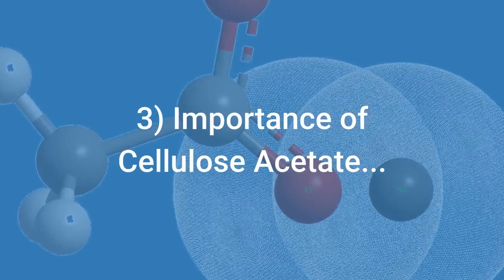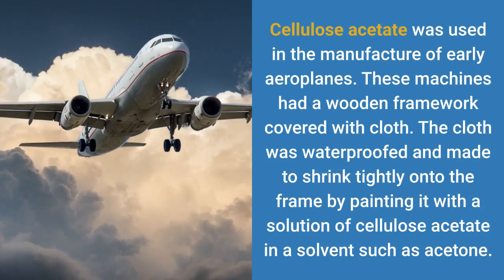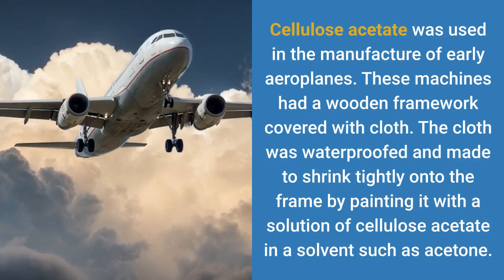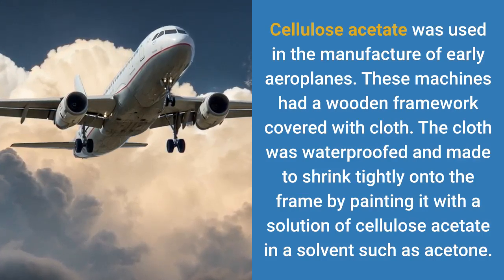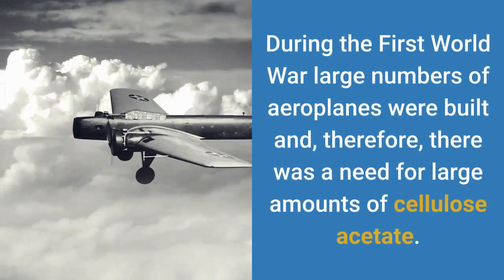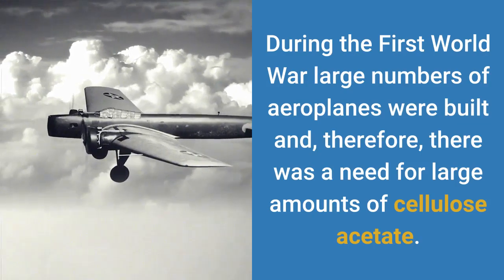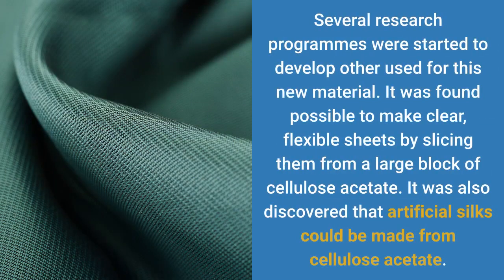Importance of cellulose acetate. Cellulose acetate was used in the manufacture of early aeroplanes. These machines had a wooden framework covered with cloth. The cloth was waterproofed and made to shrink tightly onto the frame by painting it with a solution of cellulose acetate in a solvent such as acetone. During the First World War large numbers of aeroplanes were built and, therefore, there was a need for large amounts of cellulose acetate. Several research programs were started to develop other uses for this new material. It was found possible to make clear, flexible sheets by slicing them from a large block of cellulose acetate. It was also discovered that artificial silks could be made from cellulose acetate.